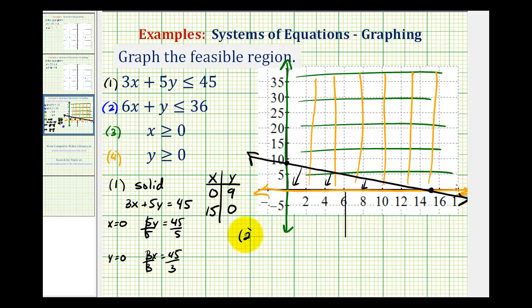Looking at inequality two, again, we'd have a solid line because we have less than or equal to. So now we'll graph 6x plus y equals 36. Let's go ahead and make another t-table because it is in standard form. We'll set x equal to zero, solve for y, and then set y equal to zero, and solve for x.